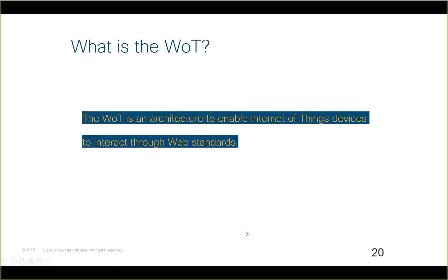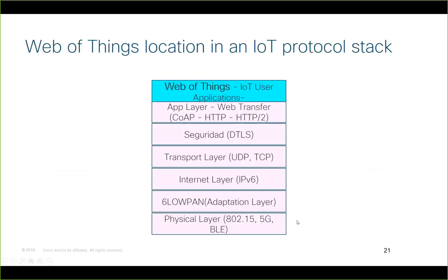The Web of Things means you should be able to connect a device with another device anywhere on the Internet, and also gives you a way to modulate and program IoT behavior through thing descriptions. So, what is the Web of Things? It is an architecture that enables IoT devices to interact through web standards — an architecture composed by building blocks. Where is it located in a common IoT protocol stack? The Internet is divided into different layers.